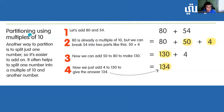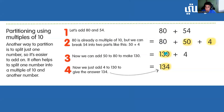Now we're going to partition using multiples of 10. We have 80 plus 54. Let's break down 54 and make it 50 plus 4, because it still adds up to the same thing. So, 80 plus 50 equals 130, and then 130 plus 4 equals 134. So, 80 plus 54 is 134.